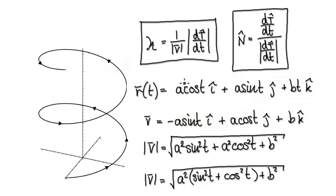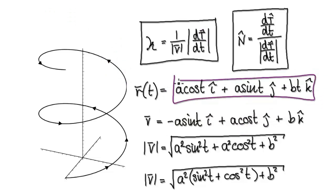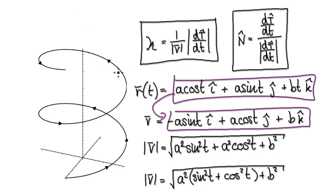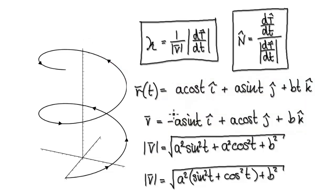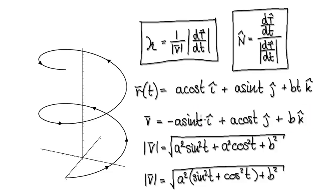Let's start again. You've got your position vector; differentiate it, and that gives you v. Then we need to divide it by its magnitude, so we need to work out the magnitude of v. The magnitude of v is found using Pythagoras in 3D space.